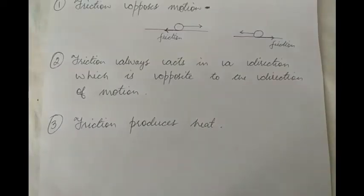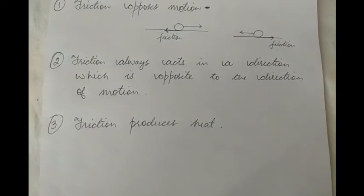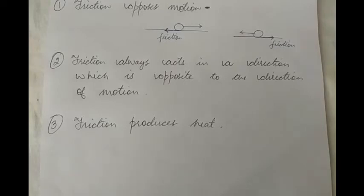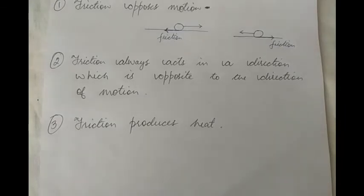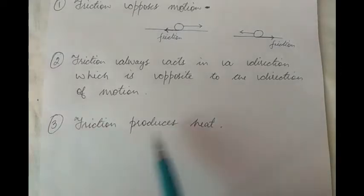The third effect is that friction always produces heat energy. For example, when we start rubbing our palms together, after some time our hands start feeling warm. This is because when we rub our palms, one palm moves over the surface of another, and the force of friction acts between the surfaces of our hands, producing heat.